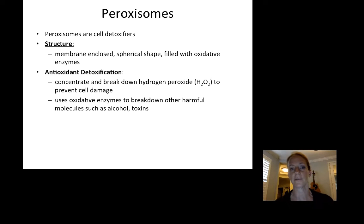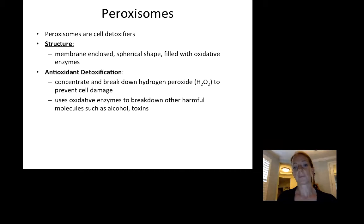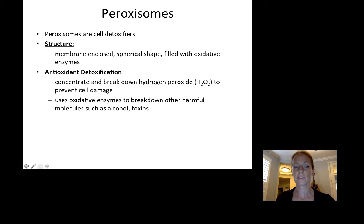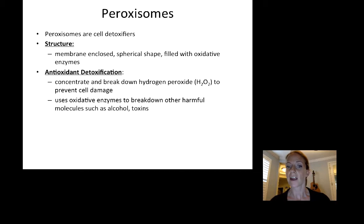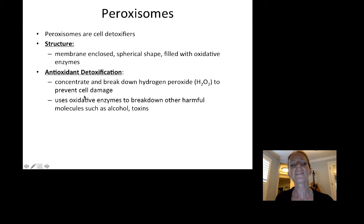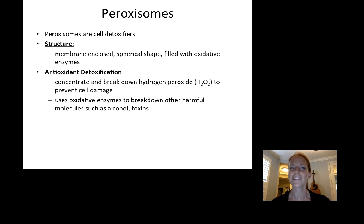Another specialized vesicle is a peroxisome. Peroxisomes are also large membrane-enclosed spherical vesicles, but instead of being filled with digestive enzymes like lysosomes, they are filled with oxidative enzymes. Peroxisomes concentrate and break down hydrogen peroxide and other oxidizing molecules to prevent cell damage. Bacteria do not have peroxisomes, which is why hydrogen peroxide can kill bacteria but not your cells. Peroxisomes also use oxidative enzymes to break down other harmful molecules such as alcohol and toxins.